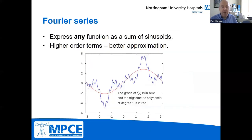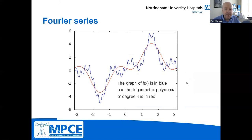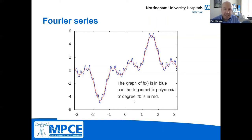It doesn't have to be a square wave — we can do this for any shape. If we're interested in finding the Fourier series of a complicated waveform, the blue line here, we fit sinusoids to it. Our first order approximation is a very low frequency sinusoid in red, and as we add in higher frequency sinusoids we get a better and better approximation to the blue waveform. The degree counts up at the bottom — when we get to about 25 in this case we've got high enough frequencies to get a good representation.